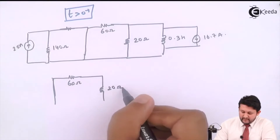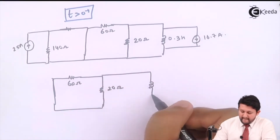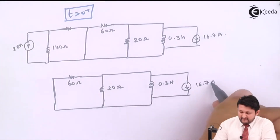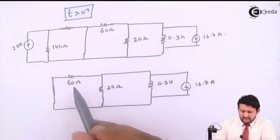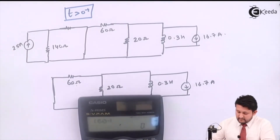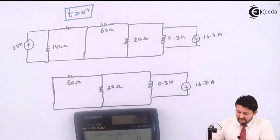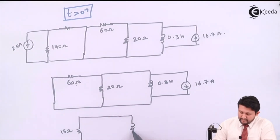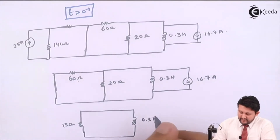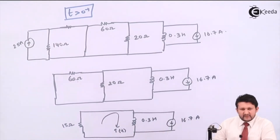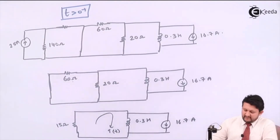The simplified circuit has 60 ohms and 20 ohms remaining. When two resistances are in parallel, use the shortcut formula: (60⁻¹ + 20⁻¹)⁻¹, which gives 15 ohms. So the final circuit is 15 ohms with an inductor of 0.3 henry and a current source of 16.7 amps. To find i(t), I need to create one loop and apply KVL.